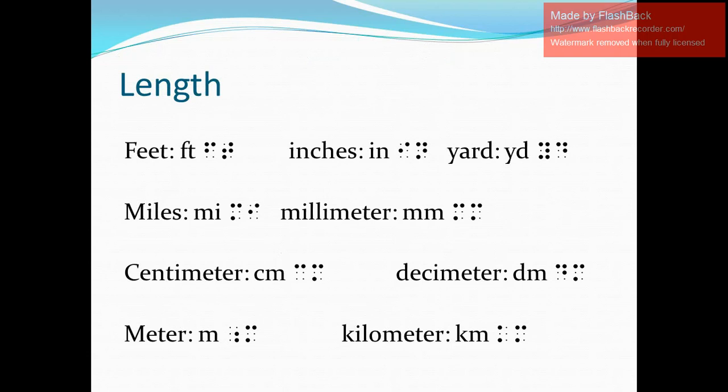The first set of abbreviations I have here are the units of length. So here we have the abbreviations for feet (letters F and T), inches (letters I and N), yard (letters Y and D), miles (letters M and I), millimeter (letters MM), centimeter (letters C and M), decimeter (letters D and M), meter (letter M alone), and kilometer (letters K and M).